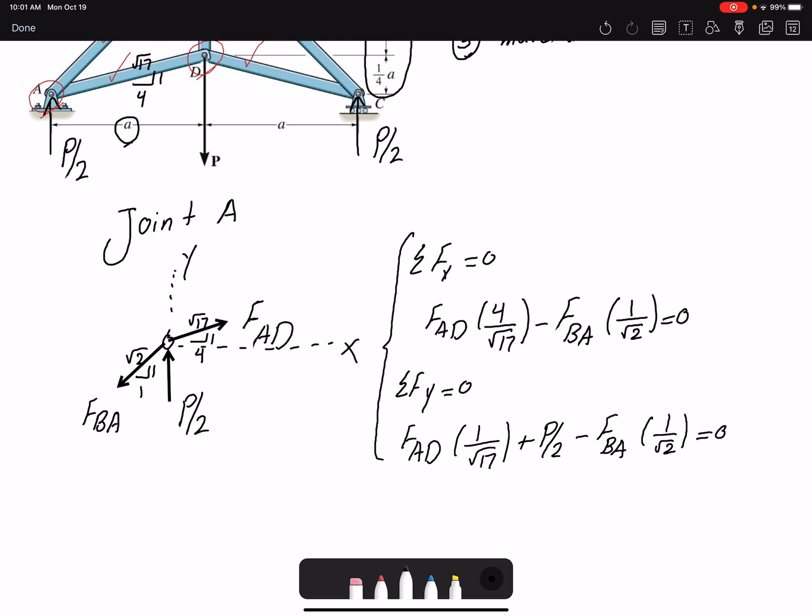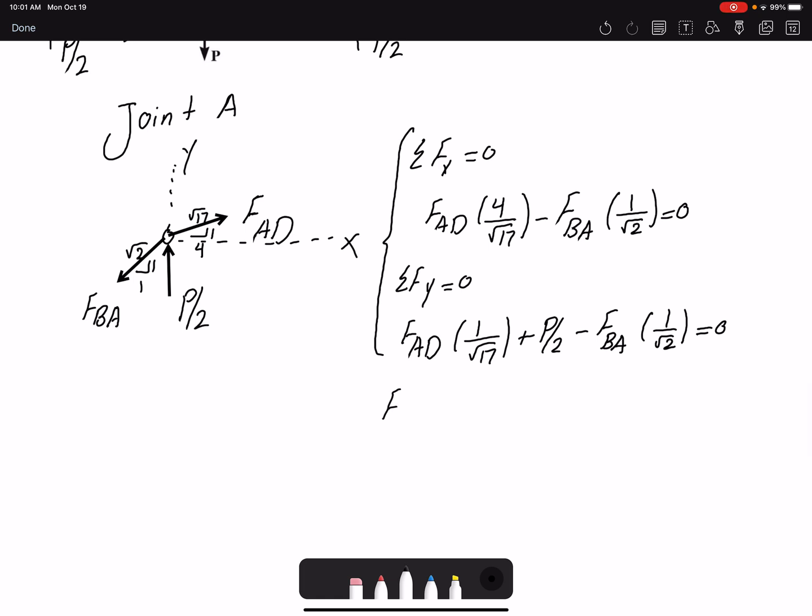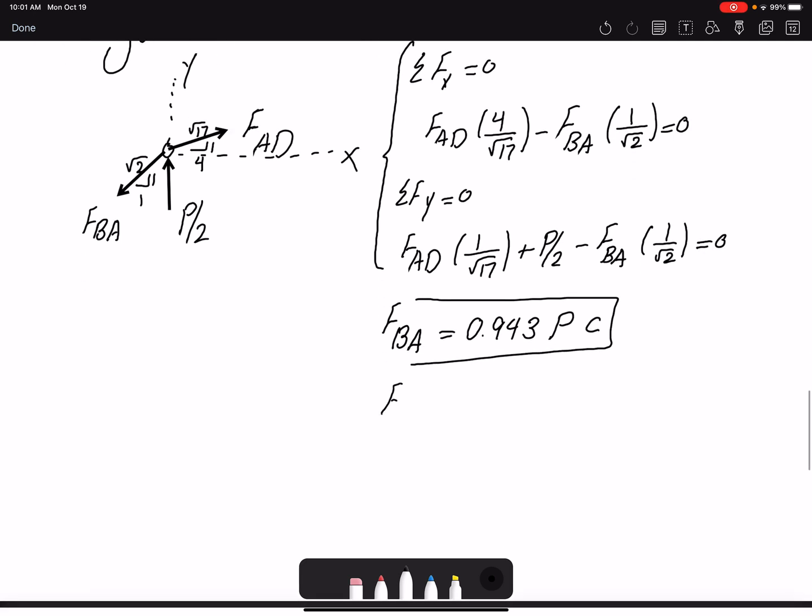I have two equations and two unknowns. I assume the value for P is known. I want to find the two forces based on P value. I can find FBA to be 0.943P. So I found the force as a function of P and it's in compression. The value that we found is positive, so it confirms our assumption. FAD is 0.687P in tension.